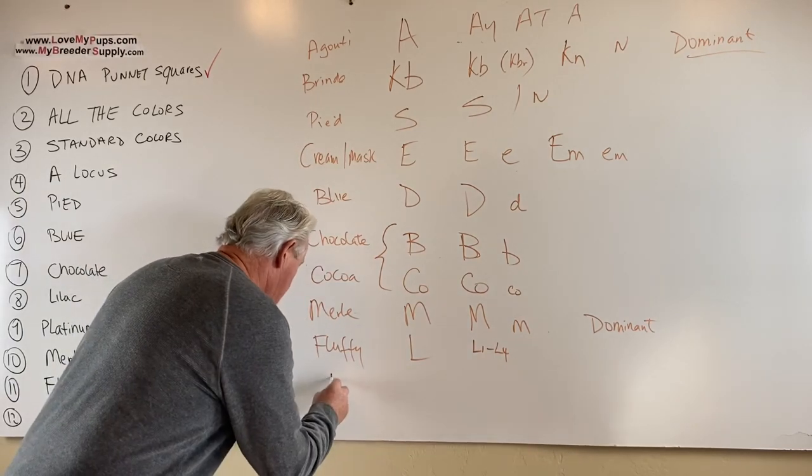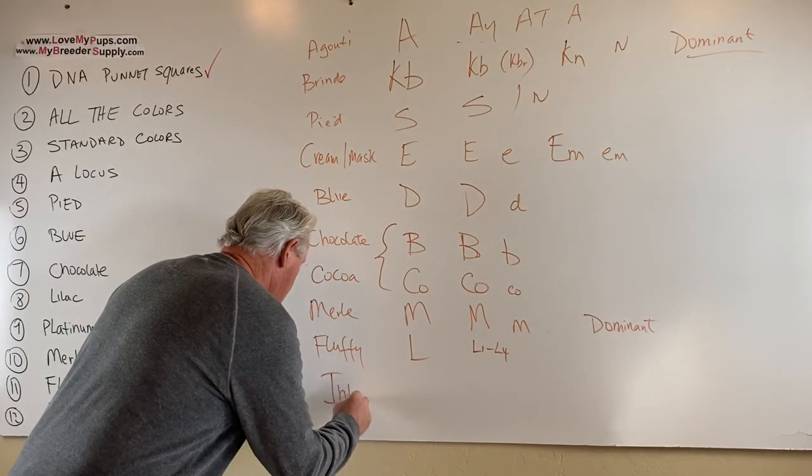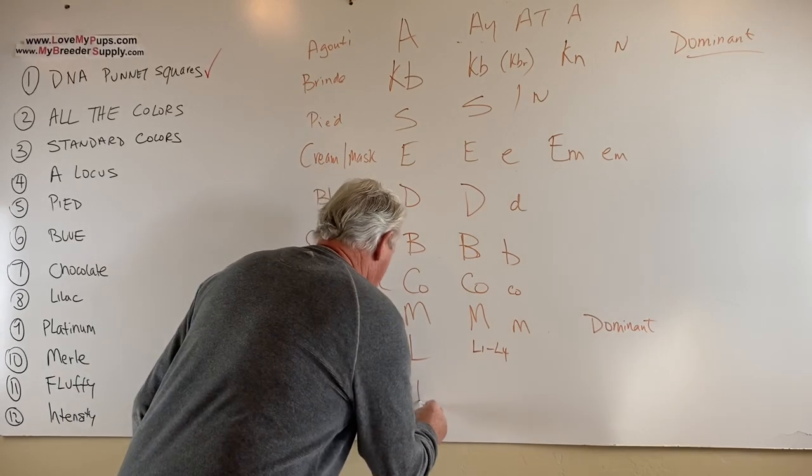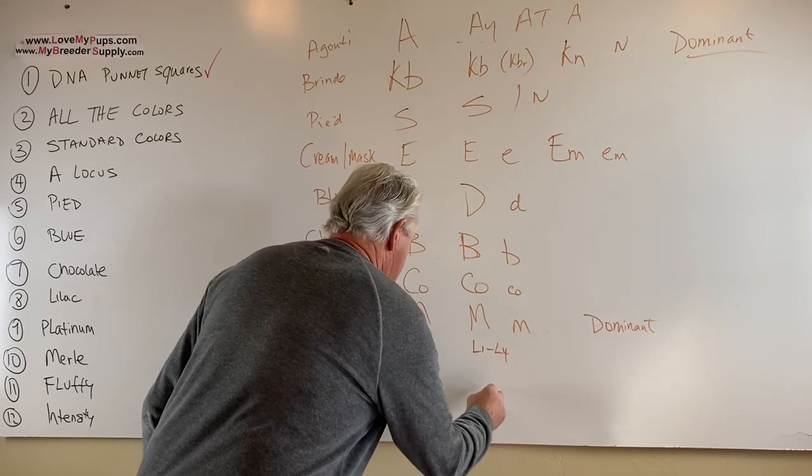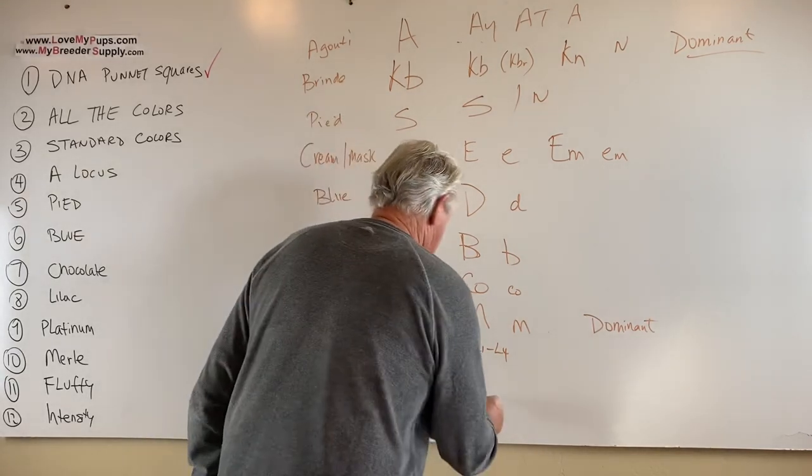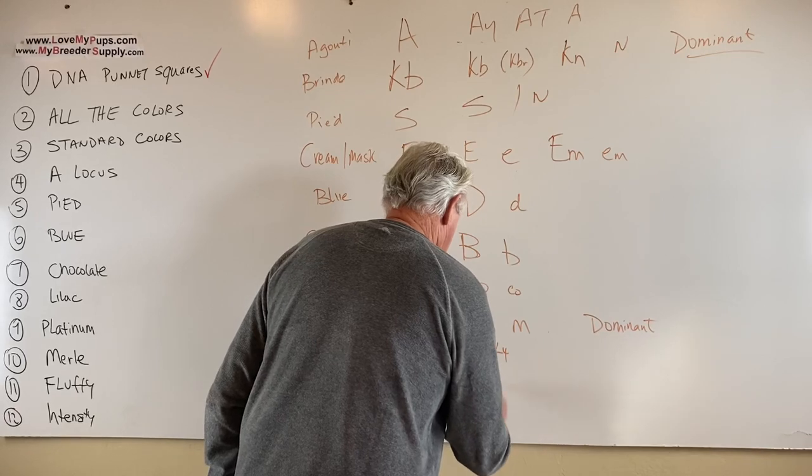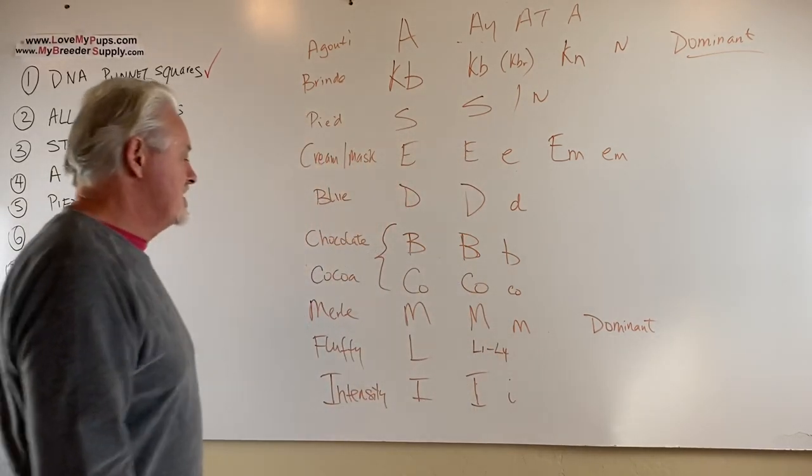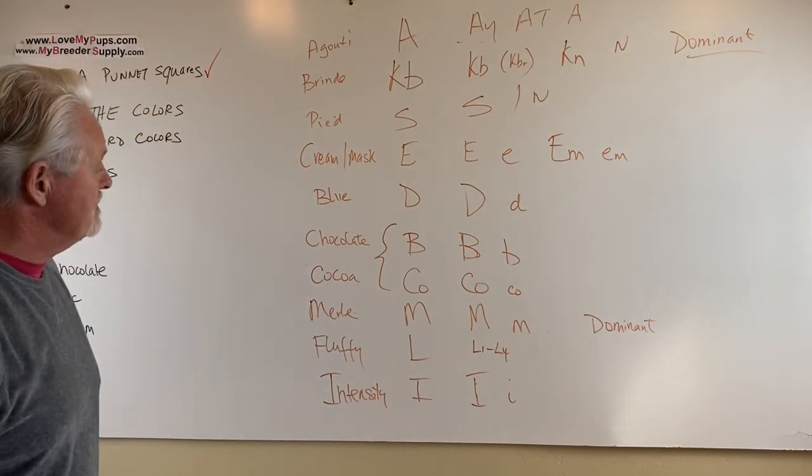And then the last one we're going to talk about is the intensity gene. And this is I. And again, it's a recessive gene. You have to have two copies of it. So you need to have the dominant version doesn't show up, or the lowercase version, recessive gene. And you've got the intensity gene playing.